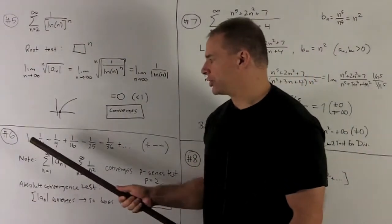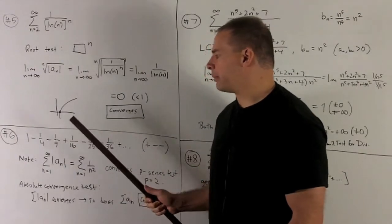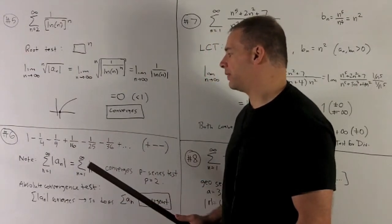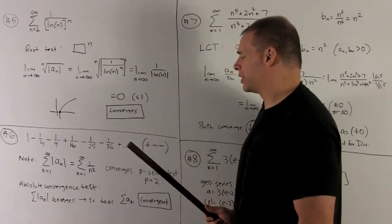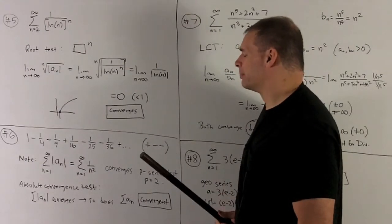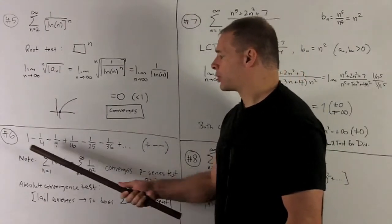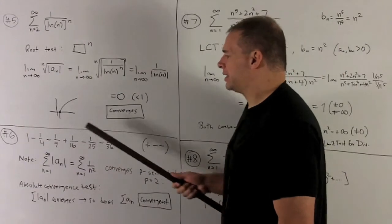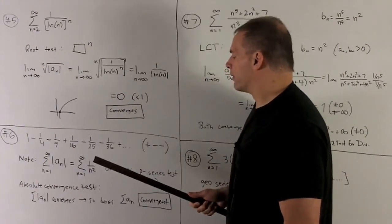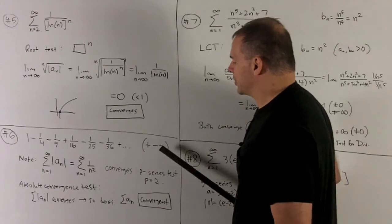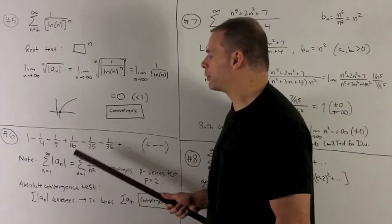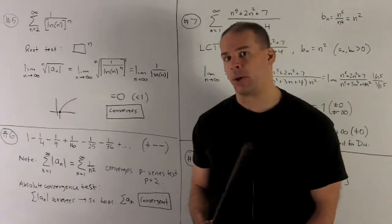Number six, let's try one minus a quarter minus a ninth, plus a sixteenth, minus a twenty-fifth, minus a thirty-sixth, plus a forty-ninth, and so on. So our series here is just going to be, take your squares, flip them over, and then we're going to have a pattern for the signs that looks like plus, minus, minus, plus, minus, minus, and so on.